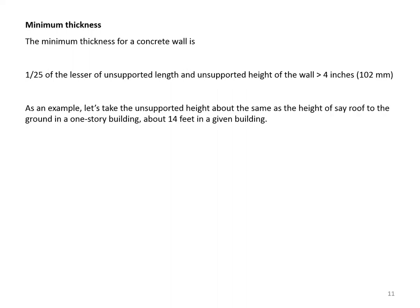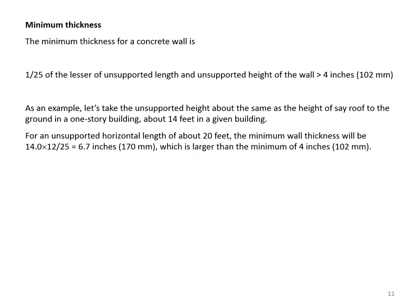As an example, with an unsupported height of about 14 feet in a one-story building and an unsupported horizontal length of about 20 feet, the minimum wall thickness is 14 × 12 ÷ 25 = 6.7 inches, which is larger than the minimum of 4 inches.